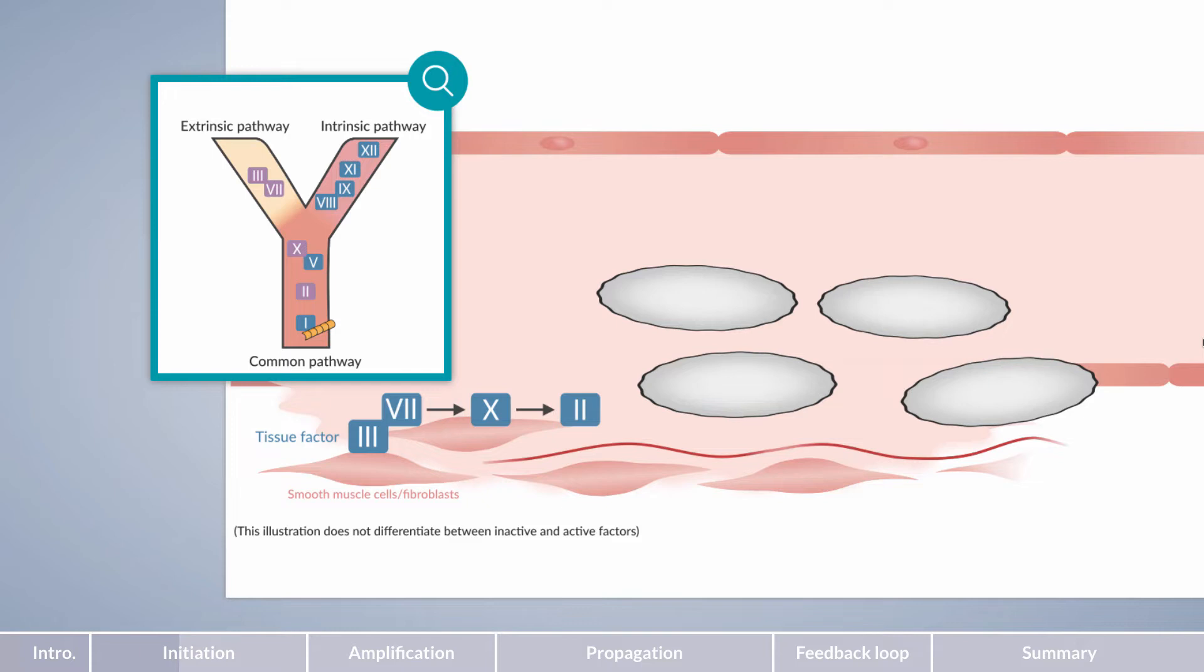Until this point, thrombin forms slowly. However, the small amount of thrombin remains insufficient to produce adequate amounts of fibrin. Yet, this small amount of thrombin is very important and can be used to activate factors in the intrinsic pathway.